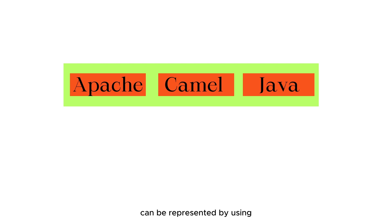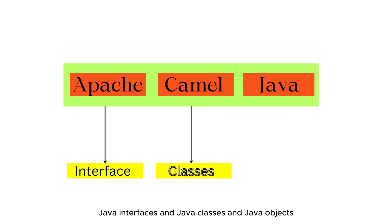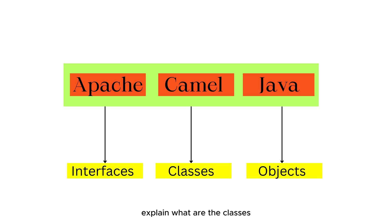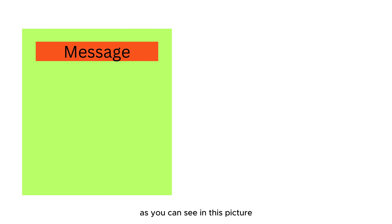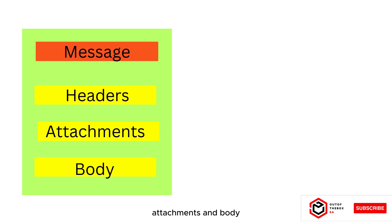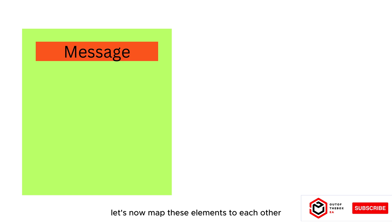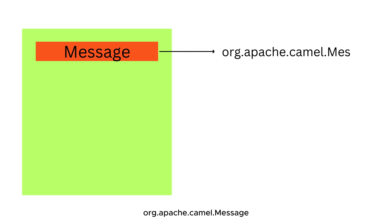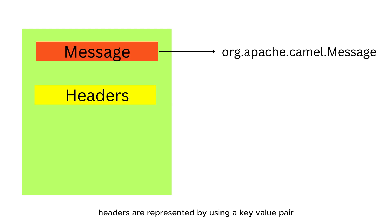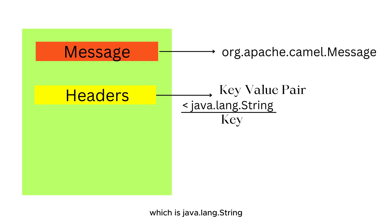Basically an exchange contains a message — which includes headers, attachments and body — as well as some properties and history. Exchange encapsulates the messages being transferred between a sender and receiver participant. Apache Camel is developed using Java, which means its message model can be represented by Java interfaces and classes. As you can see in this picture, the message is represented by the interface org.apache.camel.Message, and headers are represented by a key-value pair where the key is java.lang.String.